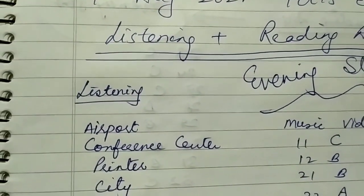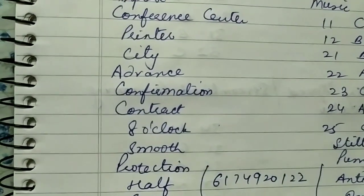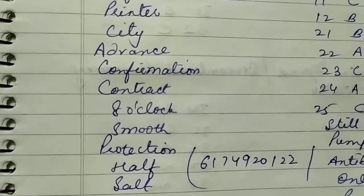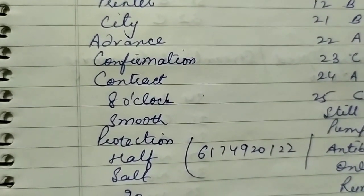Listening ke answers: first is airport, conference center, printer, city, advance, confirmation, contract, 8 o'clock, smooth, protection, half. Ek or number bhi tha.